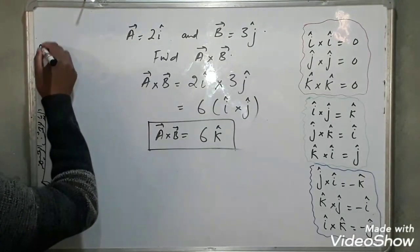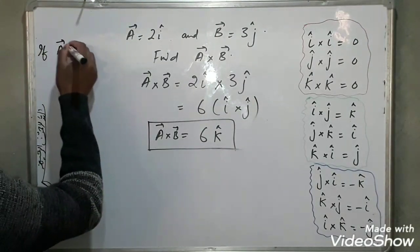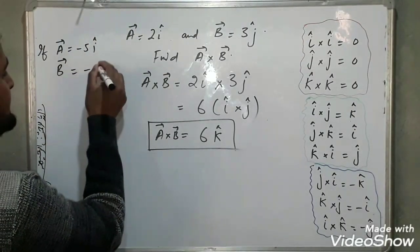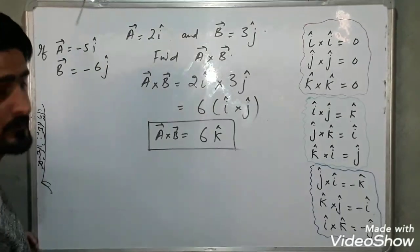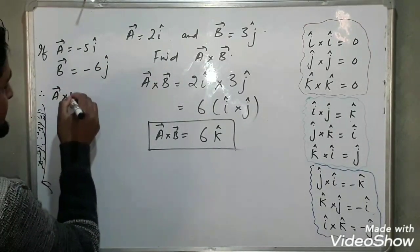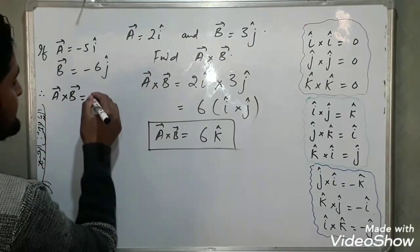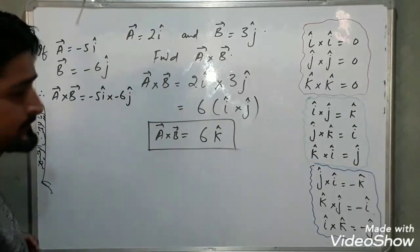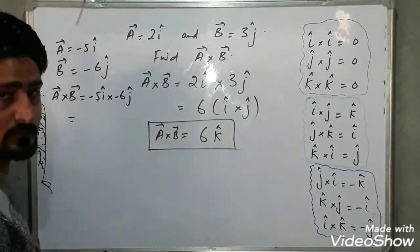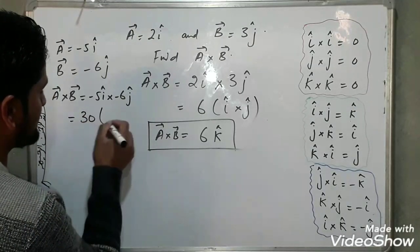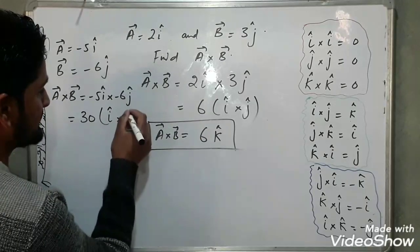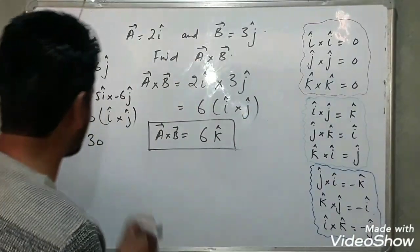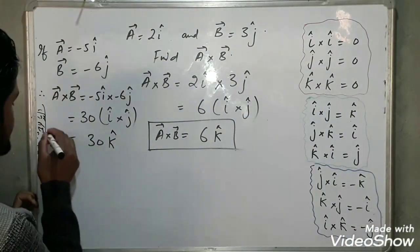Next, if vector a equals minus 5i and vector b equals minus 6j, then a cross b equals minus 5i cross minus 6j. Minus into minus is plus, so it is 5 into 6 equals 30, again with i cross j. Since i cross j equals k, a cross b equals 30k.